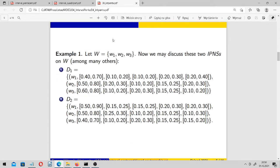For example, here is our universe: w1, w2, w3. We have three objects and now we may discuss, among many others, these two intuitionistic pentapartitioned neutrosophic sets. Each object has its fuzzy degree, its interval of truth, contradiction, and so on.